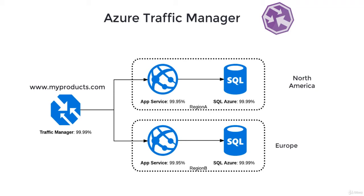Traffic Manager supports external, non-Azure endpoints. So how does Traffic Manager select an endpoint? It selects the endpoint based on the traffic routing method. Traffic Manager supports different routing methods to suit different application needs. Once the endpoint is selected, clients then contact directly to the appropriate service endpoint — whether that's an Azure Virtual Machine, Azure Web Apps, App Services, or other cloud services.